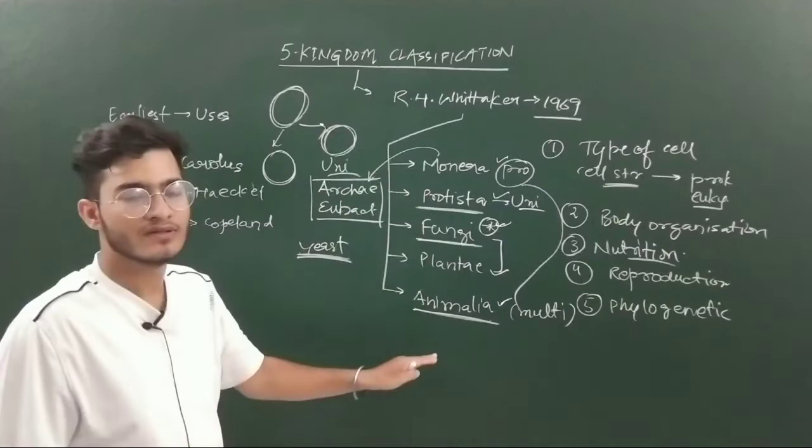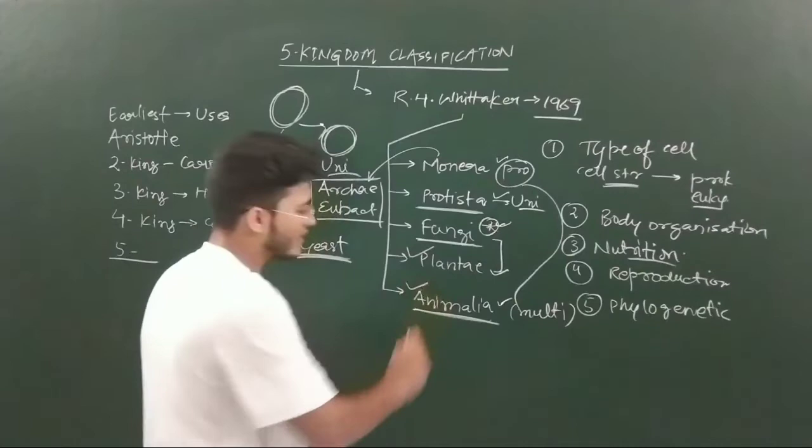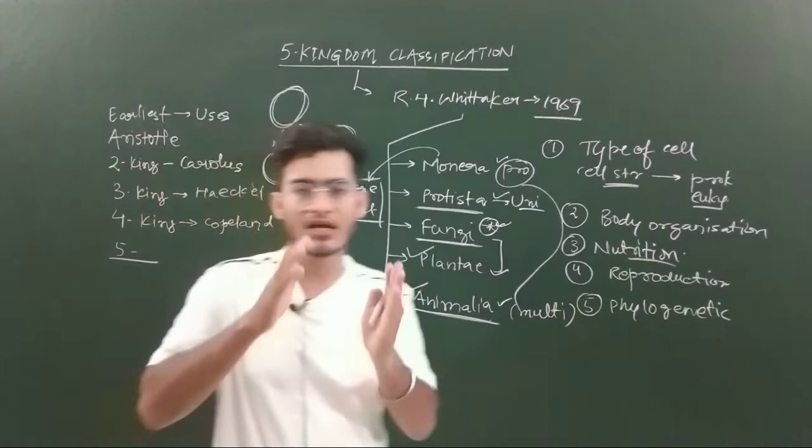Plant Kingdom and Animal Kingdom are chapters which are very crucial in this biological classification as the end part of this topic.